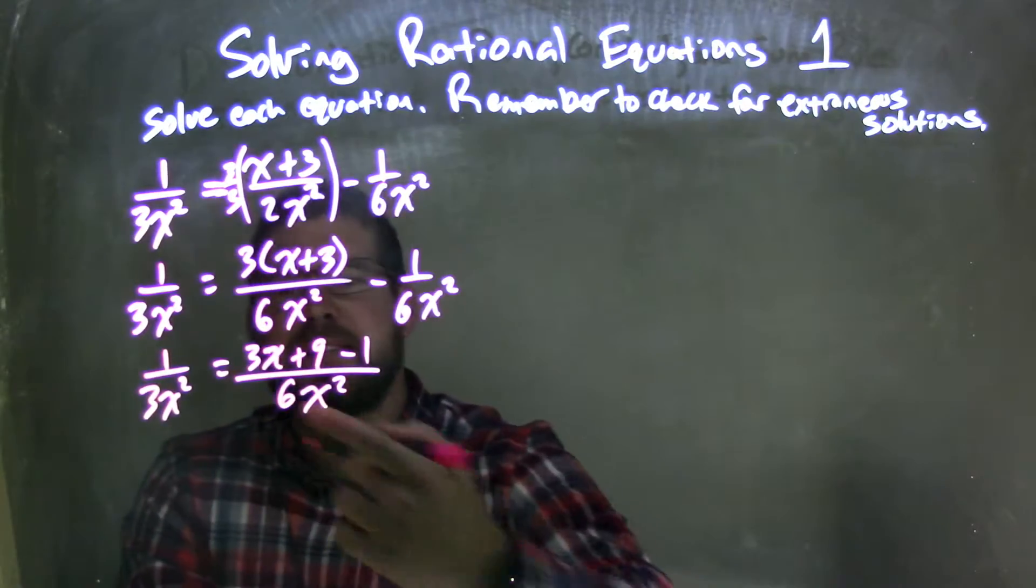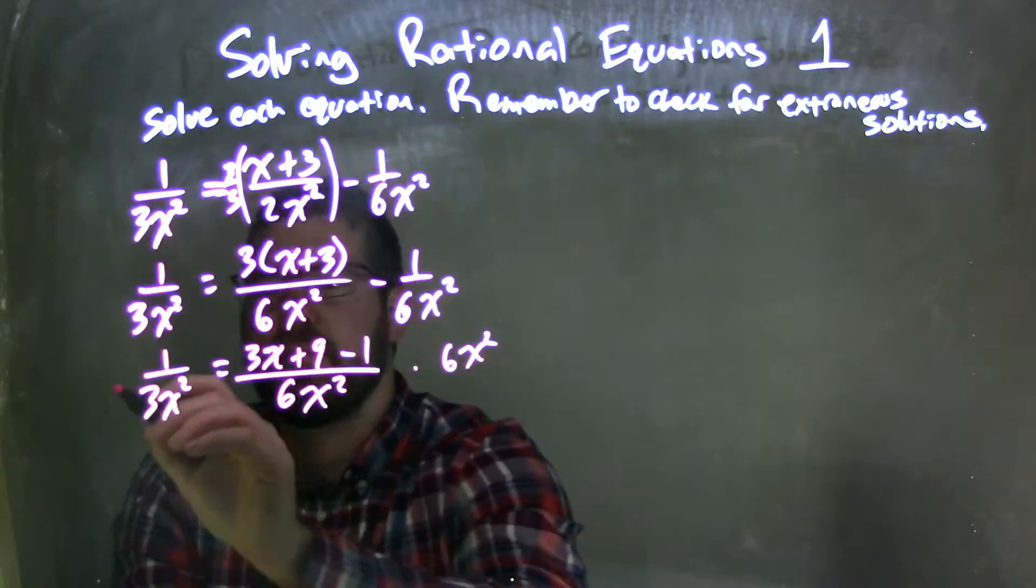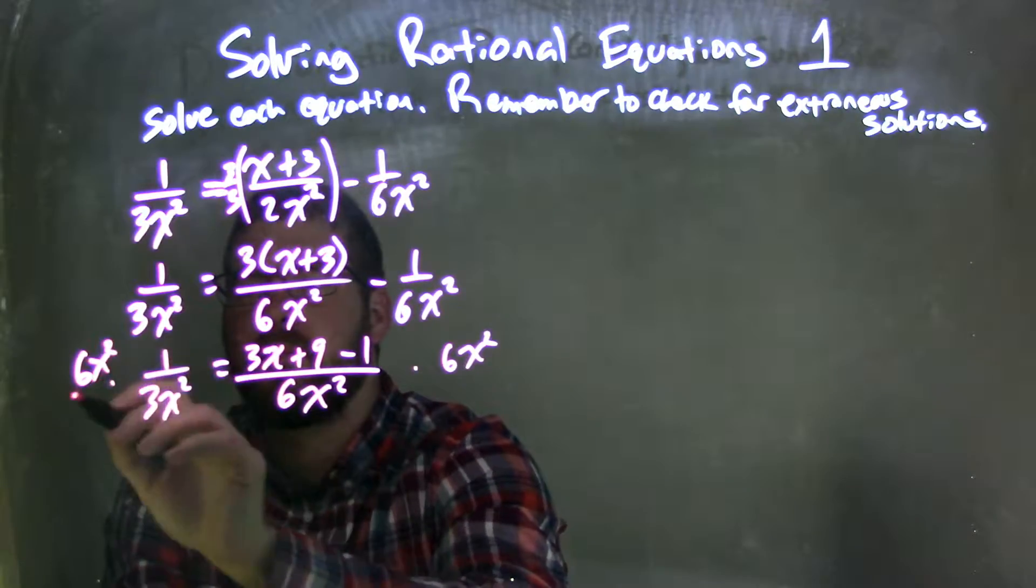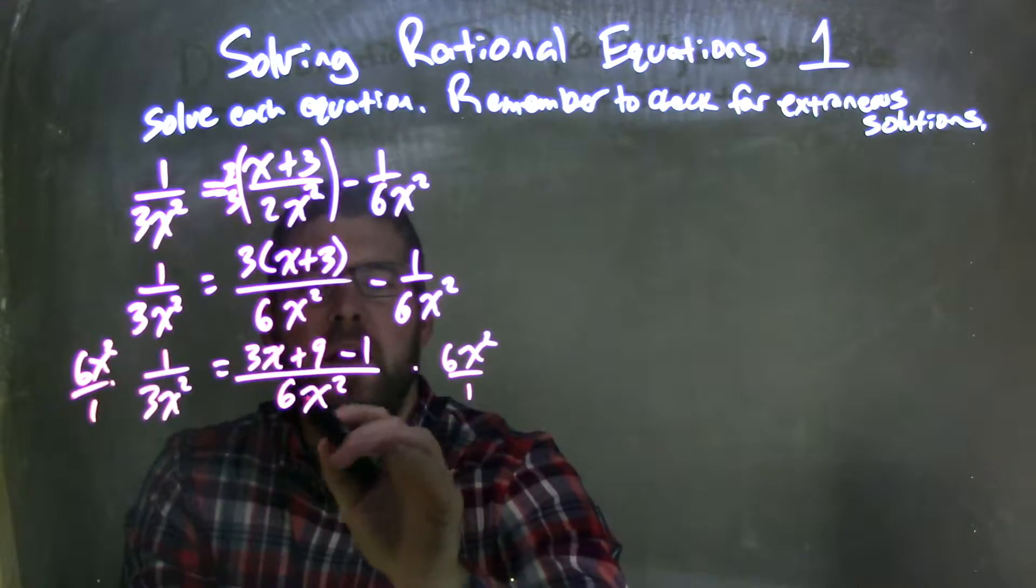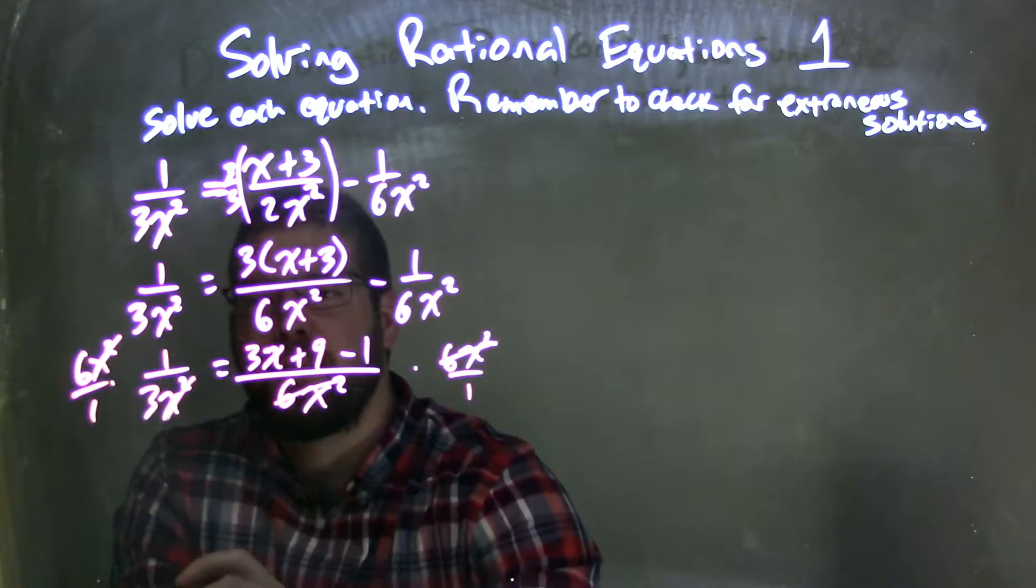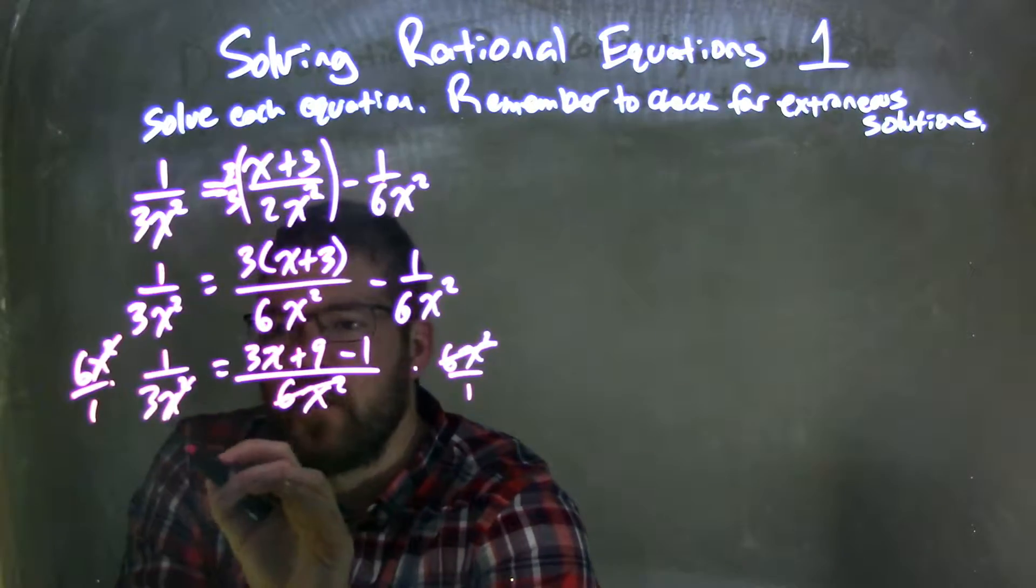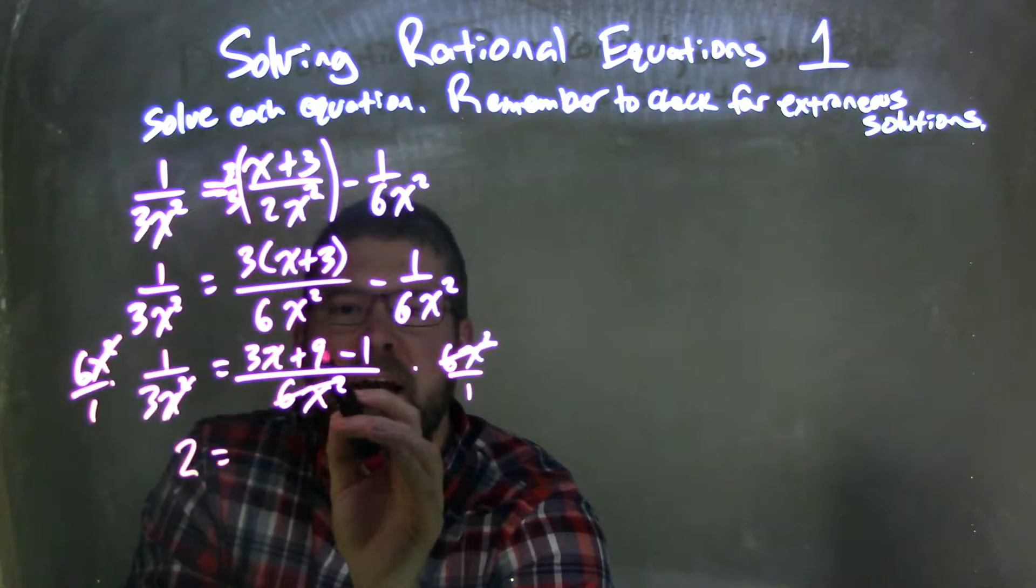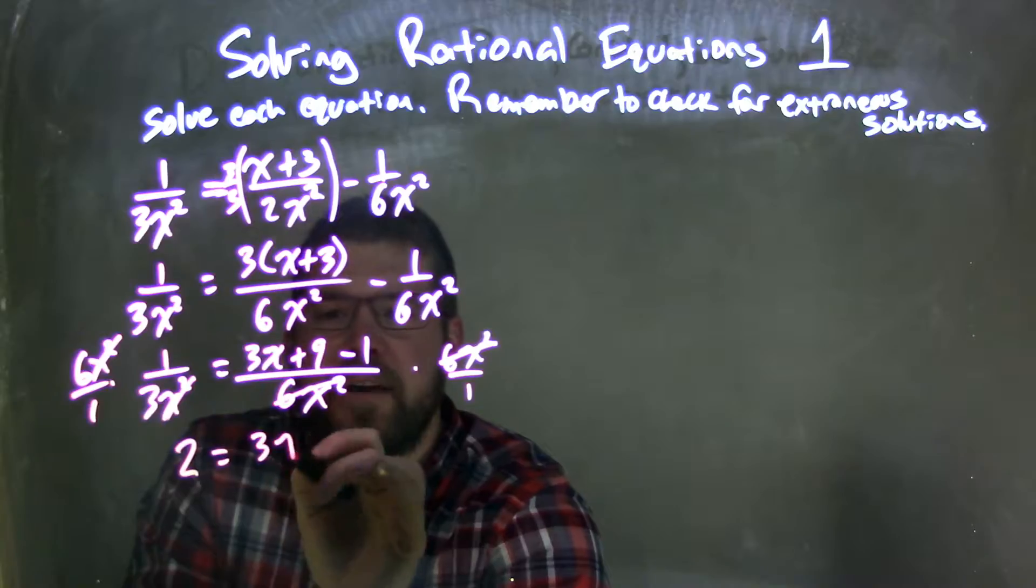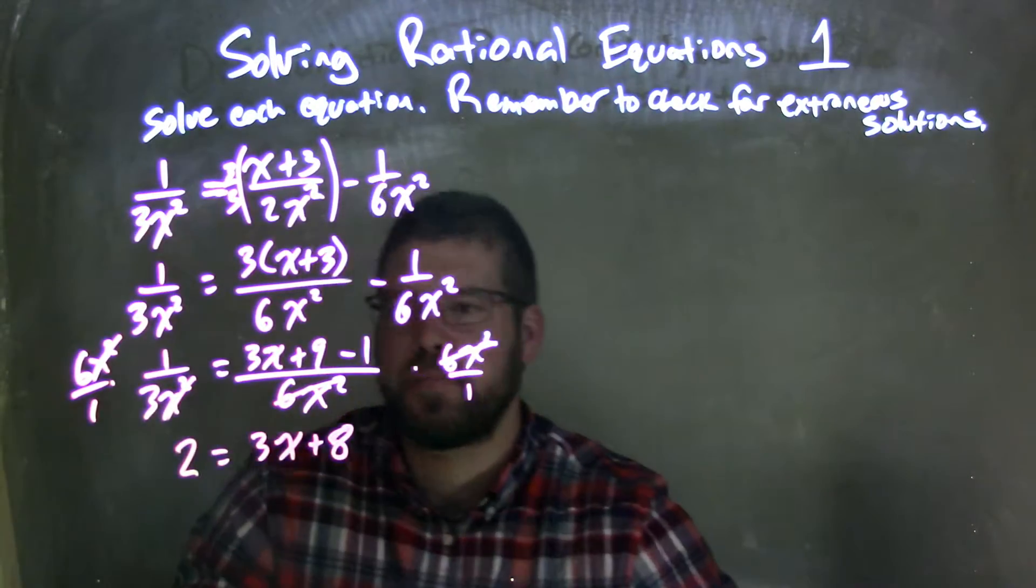Now, I'm going to multiply both sides by 6x squared. That eliminates the 6x squared here and the x squared there, leaving me—6 divided by 3 comes out to be 2—so we have 2 equals 3x plus 8.